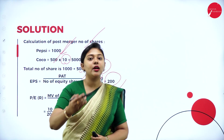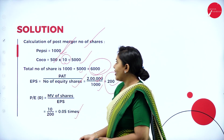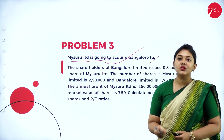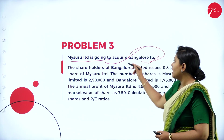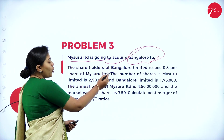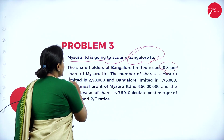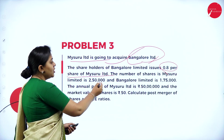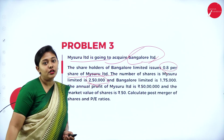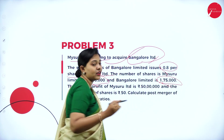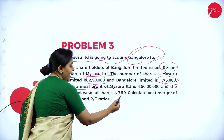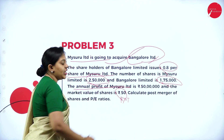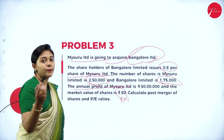For better clarity, let us take one more problem. Problem 3: Mysore Limited is going to acquire Bangalore Limited. So Mysore Limited is the acquirer company and Bangalore is the target company. The shareholders of Bangalore Limited are issued 0.8 shares of Mysore Limited per share. Mysore Limited has 2,50,000 shares and Bangalore Limited has 1,75,000 shares. The annual profit after tax is 50 lakh and the market value of shares is 50 rupees. Calculate the post-merger number of shares and the price-to-earnings ratio.